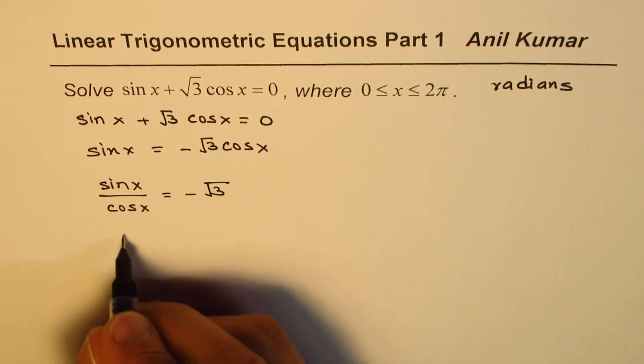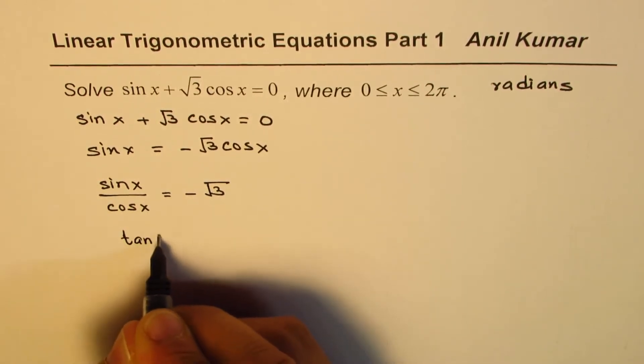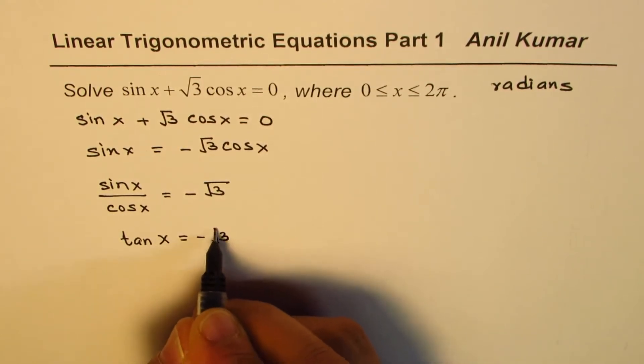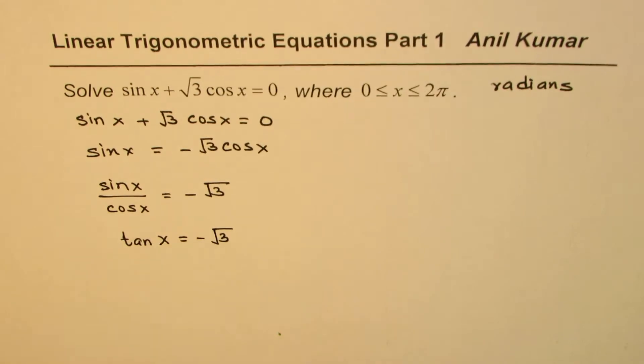Now sin x divided by cos x is tan x. So we get another trigonometric ratio whose value we need to find, so that we get minus square root 3.